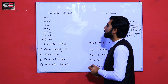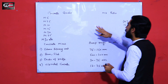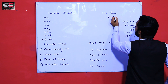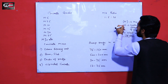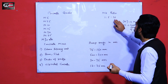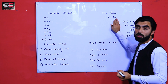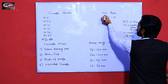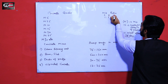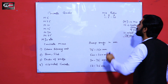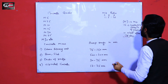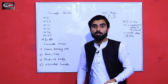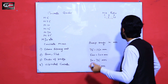For different grades of concrete we have different compressive strengths. For example, M5 has a mix ratio of 1:5:10 — where 1 is cement, 5 is fine aggregate (sand), and 10 is coarse aggregate. When we make concrete from this ratio it is called M5 grade concrete.